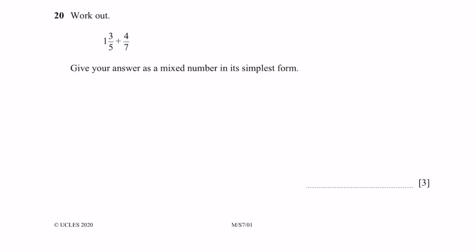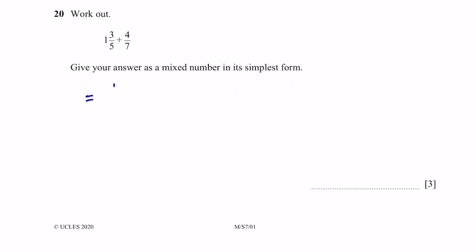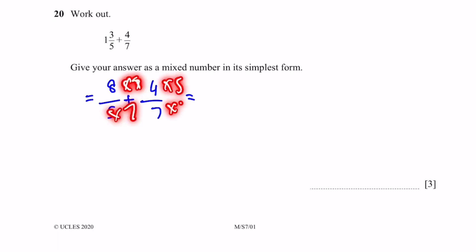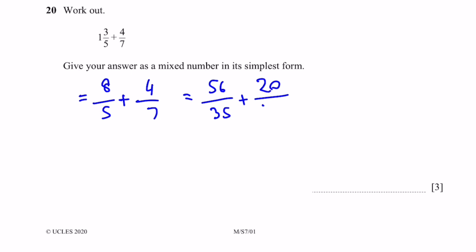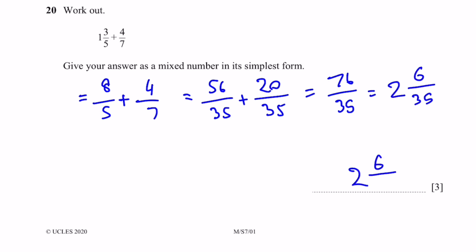Question 20. Work out 1 and 3/5 plus 4/7. Give the answer as a mixed number in simplest form. Convert to an improper fraction: 8/5 plus 4/7. Multiply to get a common denominator of 35: giving 56/35 plus 20/35, which equals 76/35, which equals 2 and 6/35.